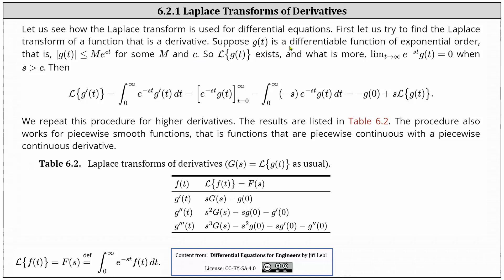Suppose g of t is a differentiable function of exponential order. That is, the absolute value of g of t is less than or equal to m times e to the power of ct, for some m and c. And therefore, the Laplace transform of g of t exists and the limit as t approaches infinity of e to the power of negative st times g of t equals zero when s is greater than c.